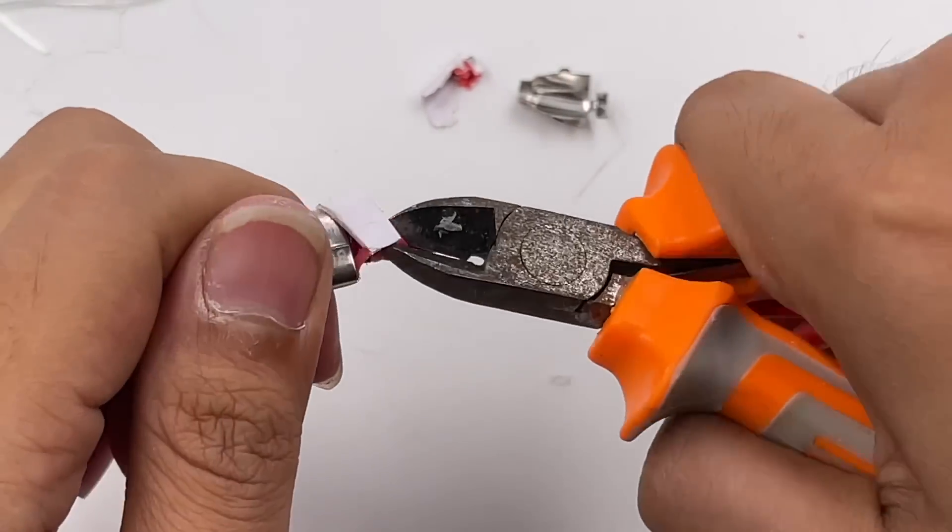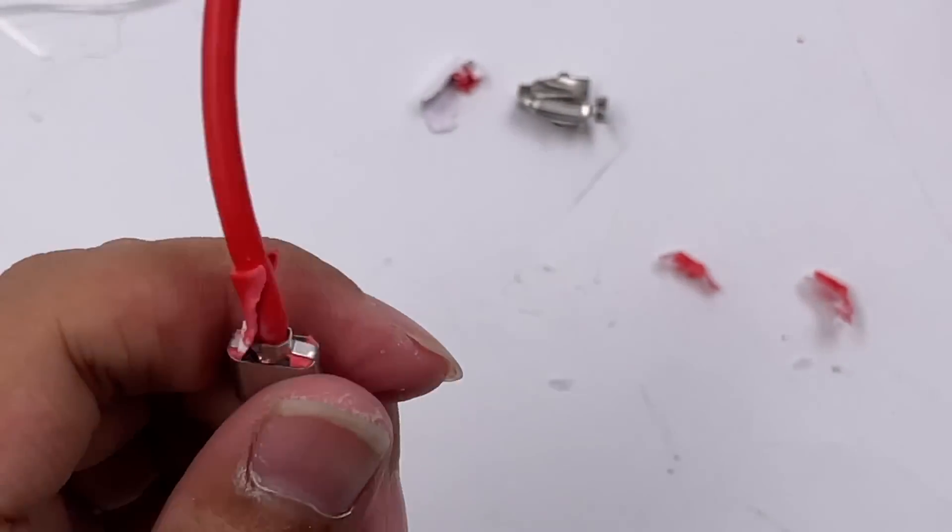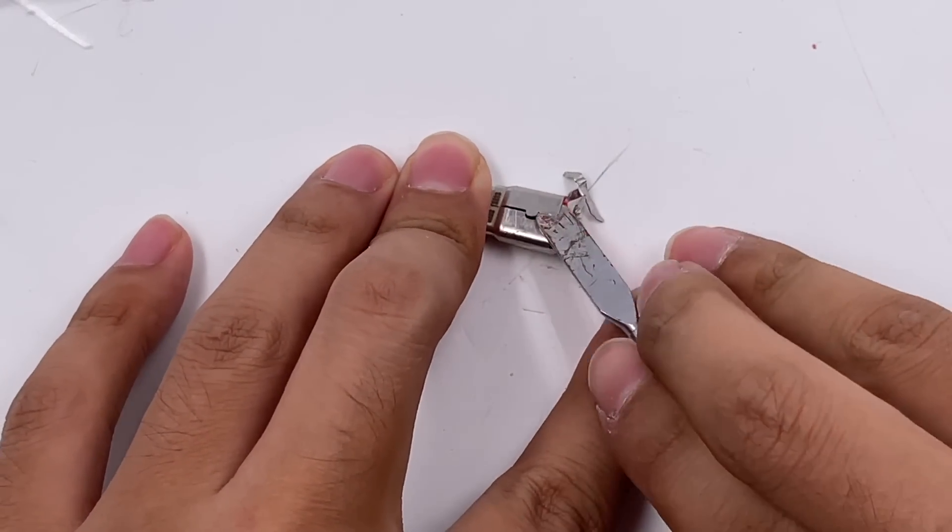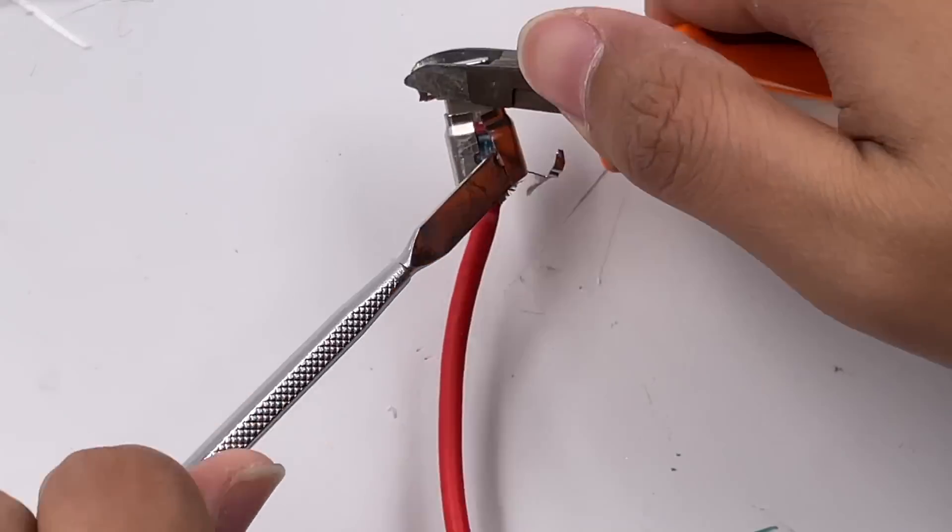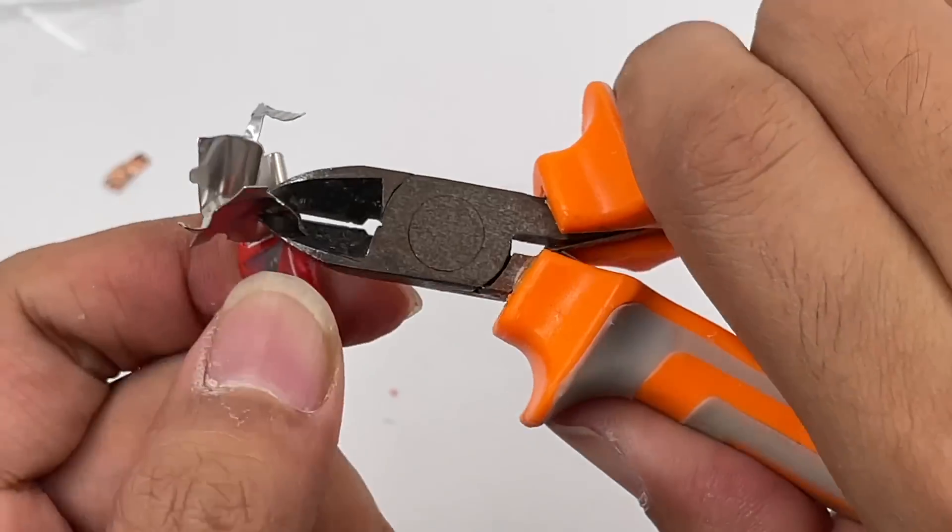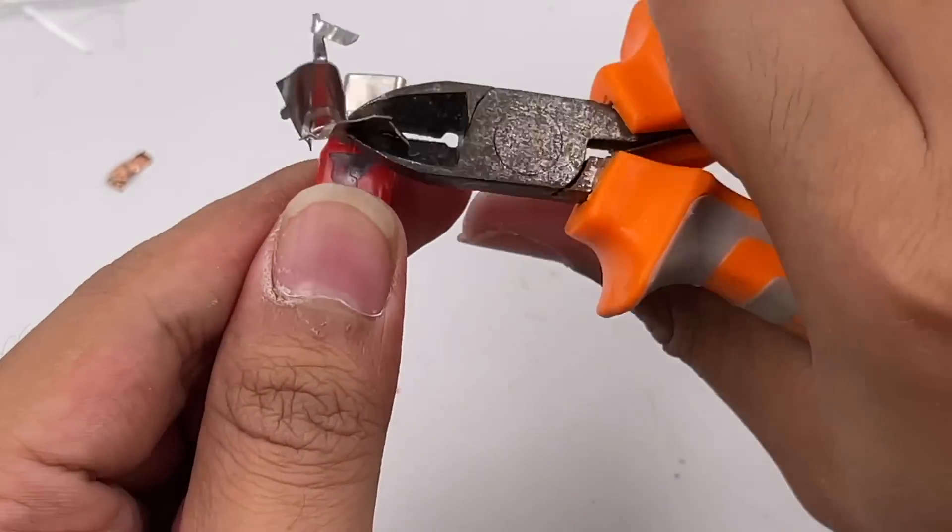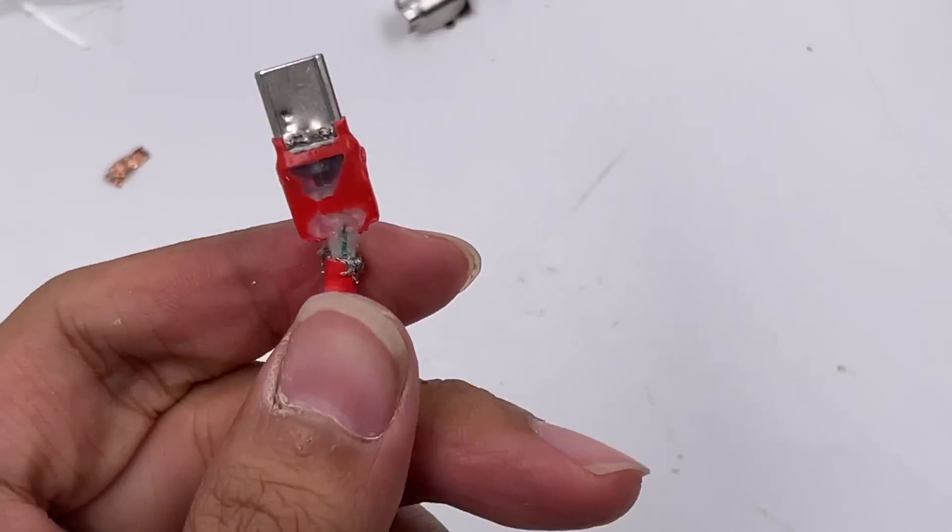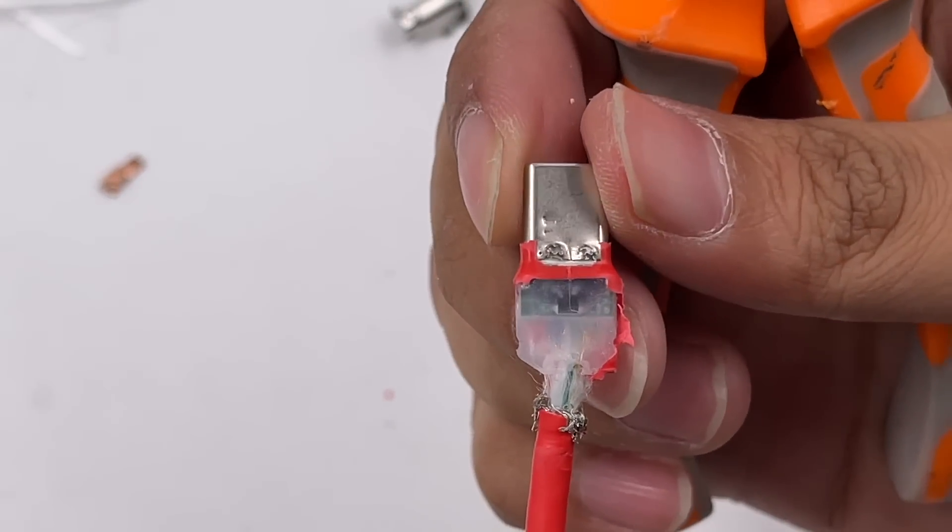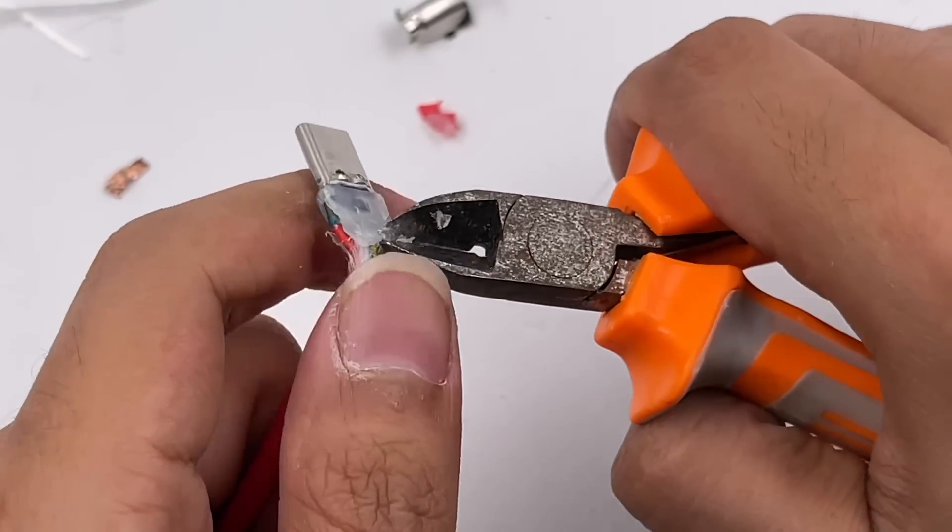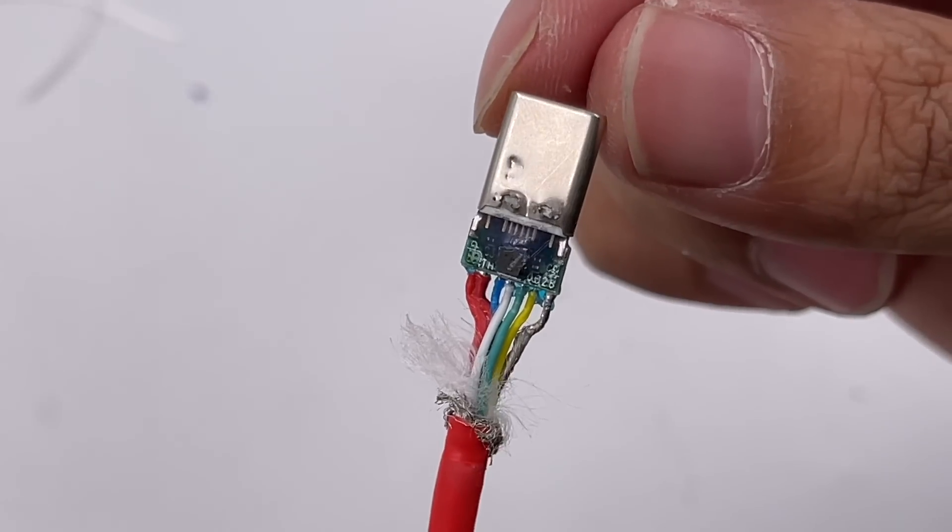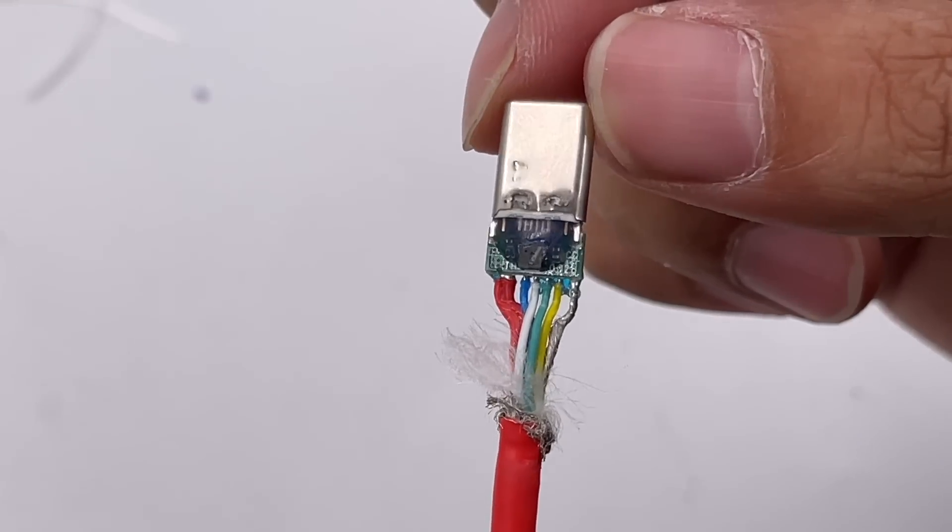Then, let's take a look at the other side. It also adopts spot welding, and the internal structure is almost the same as the other side. After removing all the obstacles, finally, we found the eMarker chip is in here.